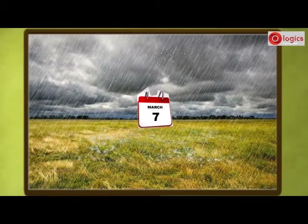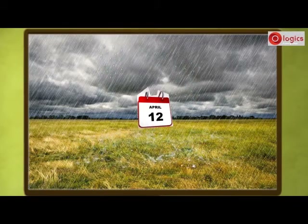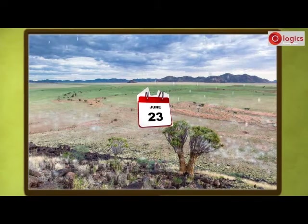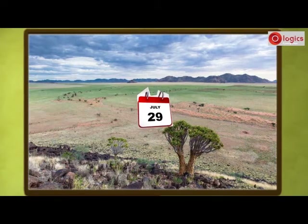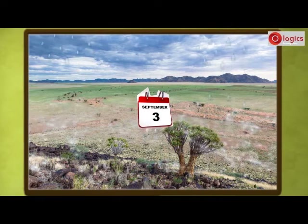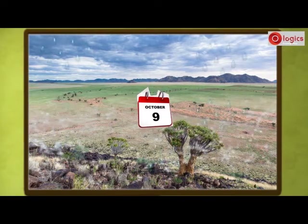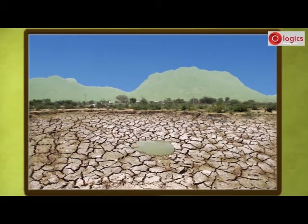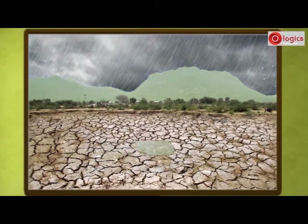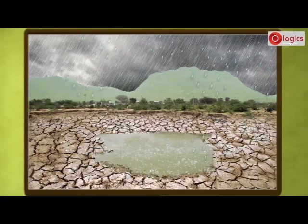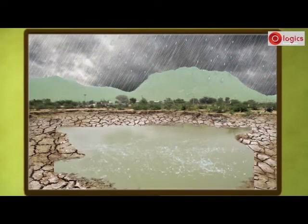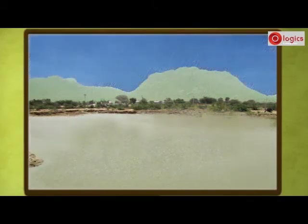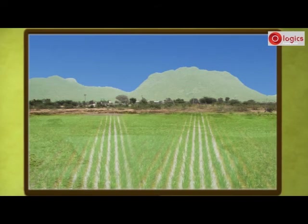In some parts of the world it rains throughout the year, while there are places where it rains only for a few days. In our country, most of the rainfall occurs during the monsoon season. Rains bring relief especially after hot summer days, and the sowing of many crops depends on the arrival of the monsoon.